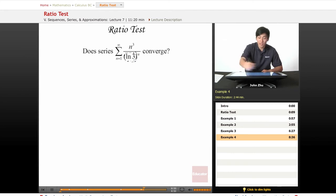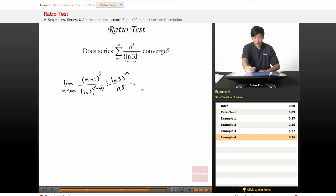So let's apply the ratio test. Limit as n approaches infinity of n plus 1 cubed over ln of 3 to the n plus 1, times ln of 3 to the n over n cubed. So how can we simplify this a little bit? Well, we know that natural log of 3 here to the n and natural log of 3 to the n plus 1 is just a difference of ln of 3. So we can cancel this out and cancel this out.